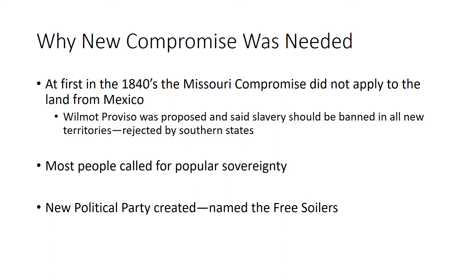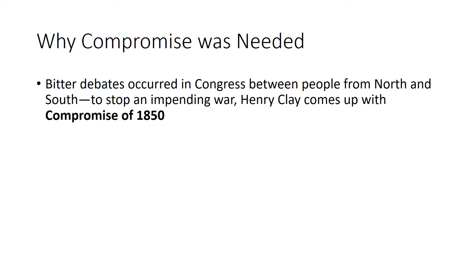Also at this time, a new political party called the Free Soilers was created. They pushed for all new free states. When the North and South could not agree on how a state would come into the Union, Henry Clay had to step in to stop an impending war, and he came up with his next compromise known as the Compromise of 1850.